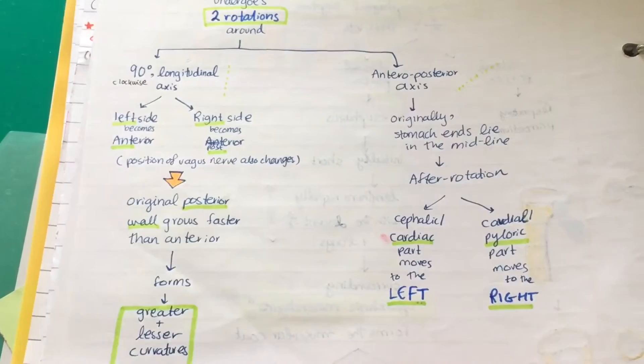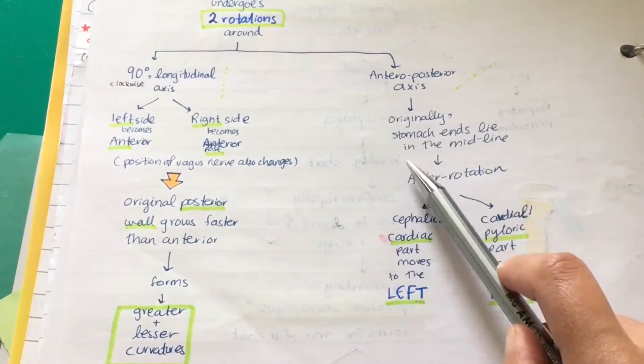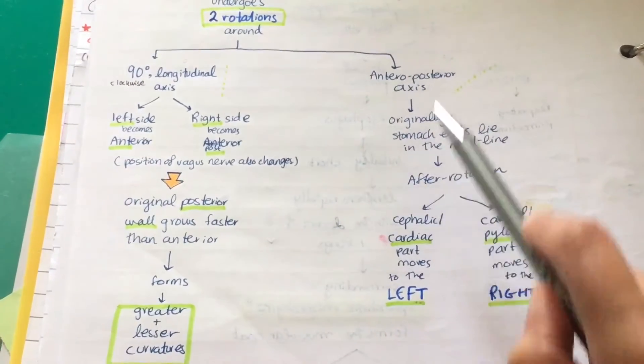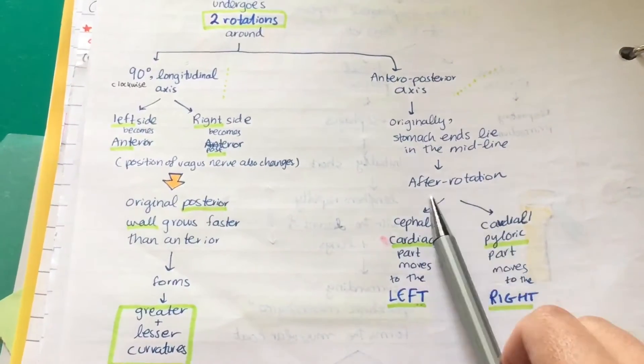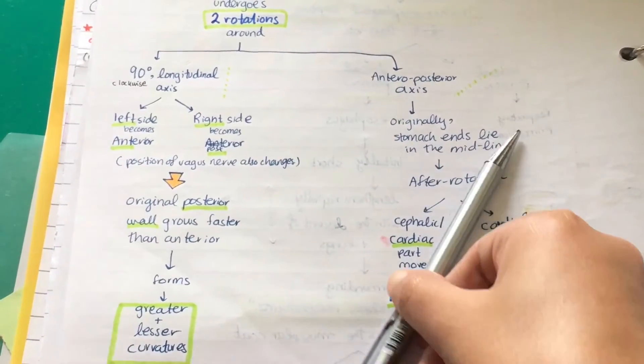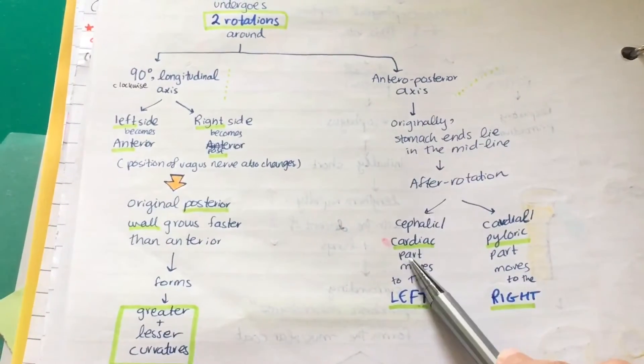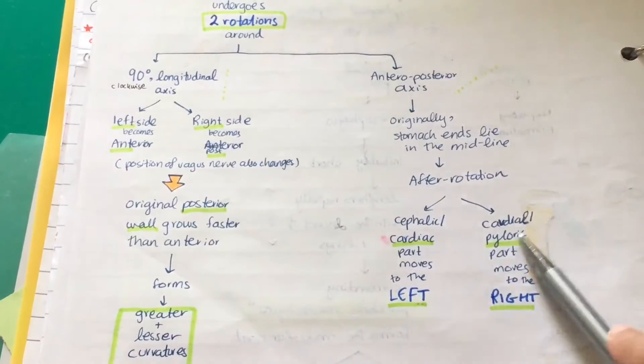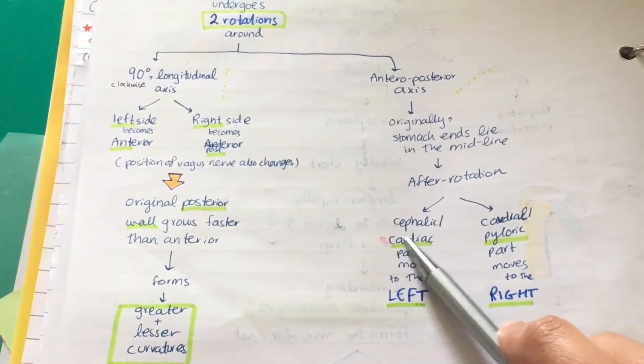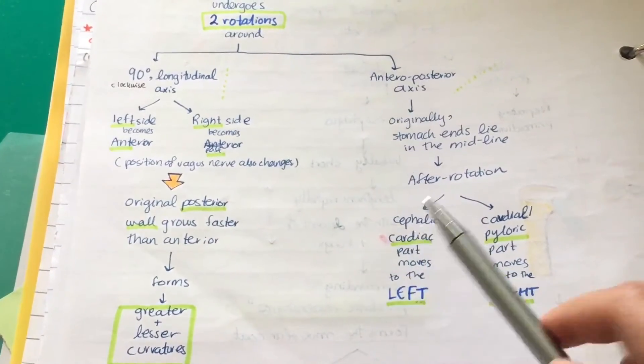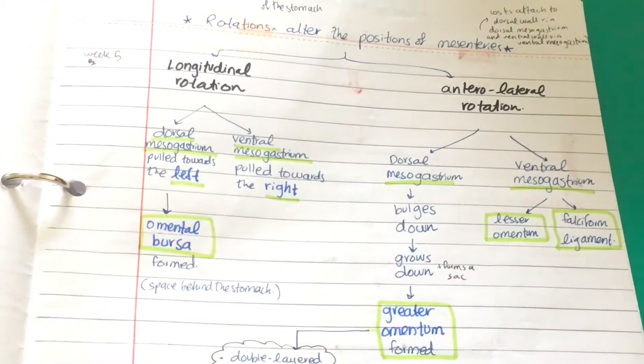And then the anterior-posterior axis: originally the stomach ends lie in the midline, just like a sausage. After rotation it moves towards an angle. The cephalic or cardiac part moves to the left and the caudal or pyloric part moves to the right. You can remember this because the heart is on the left side of the body, so the cardiac end of the stomach is also towards the left side.